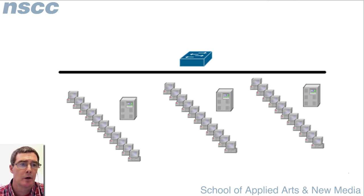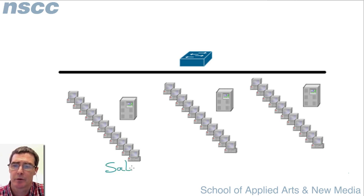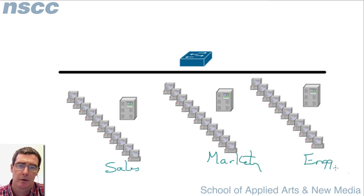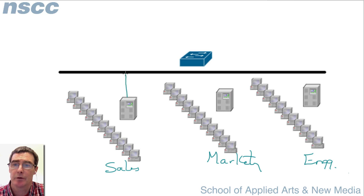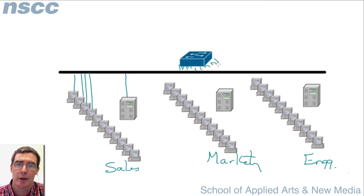Suppose we have our network at Acme Corporation with three different divisions: sales, marketing, and engineering. Typically each division uses a single server to get most of their files, so we have many connections going to the switch — I've shown it with a trunk line, but think of these as individual lines. With about 11 or 12 per division, we might have 36 PCs and three servers connected to our switch.